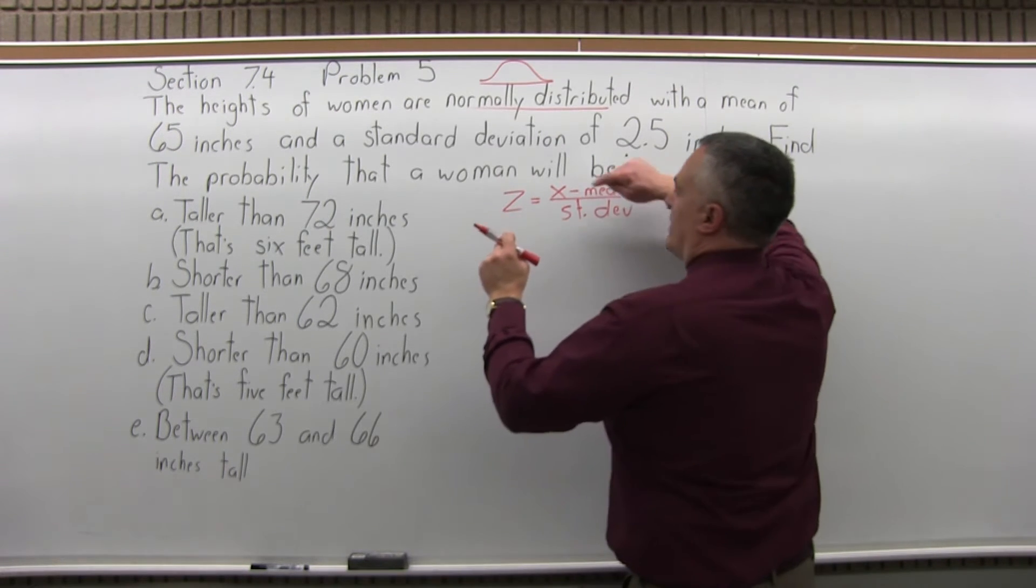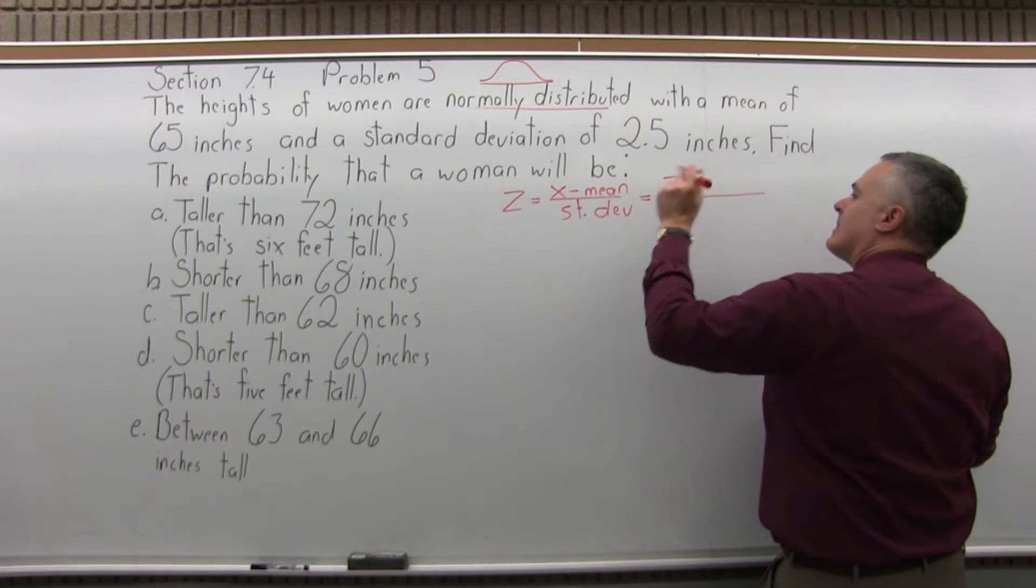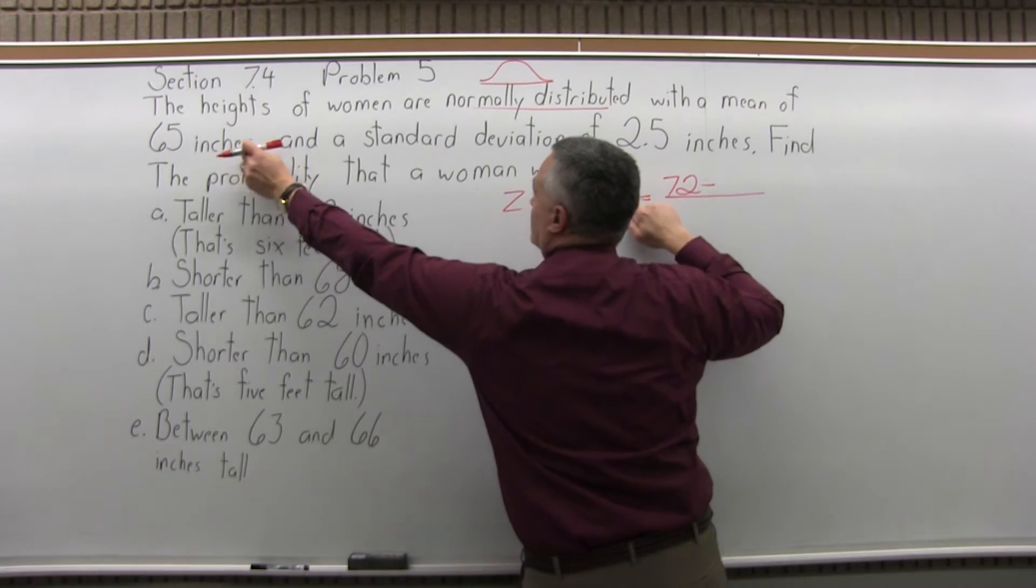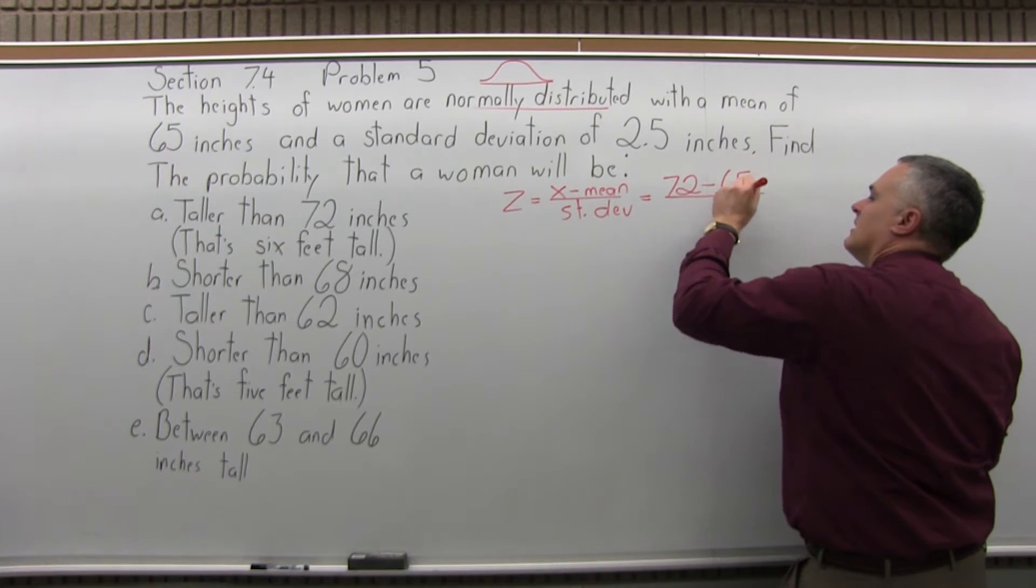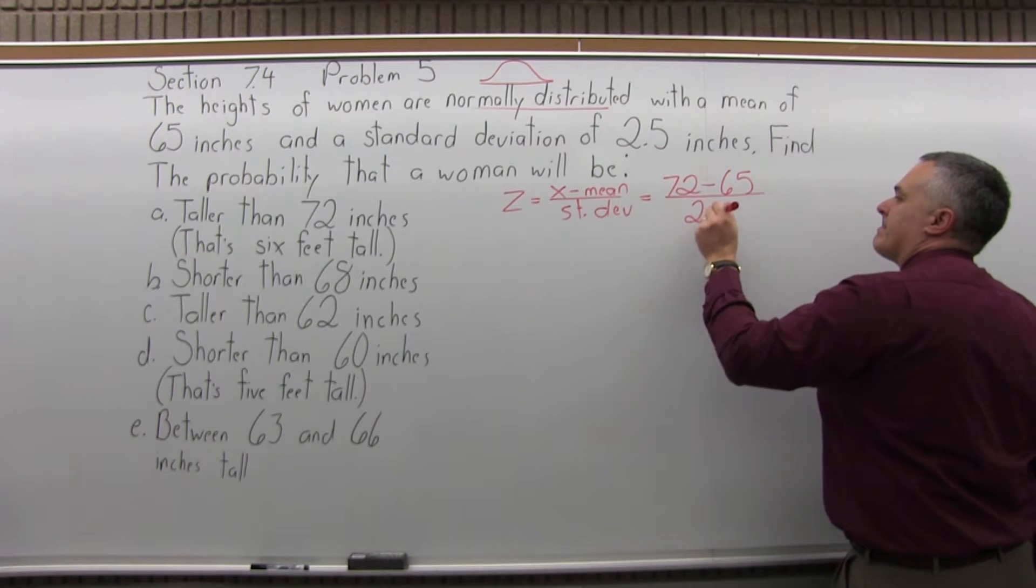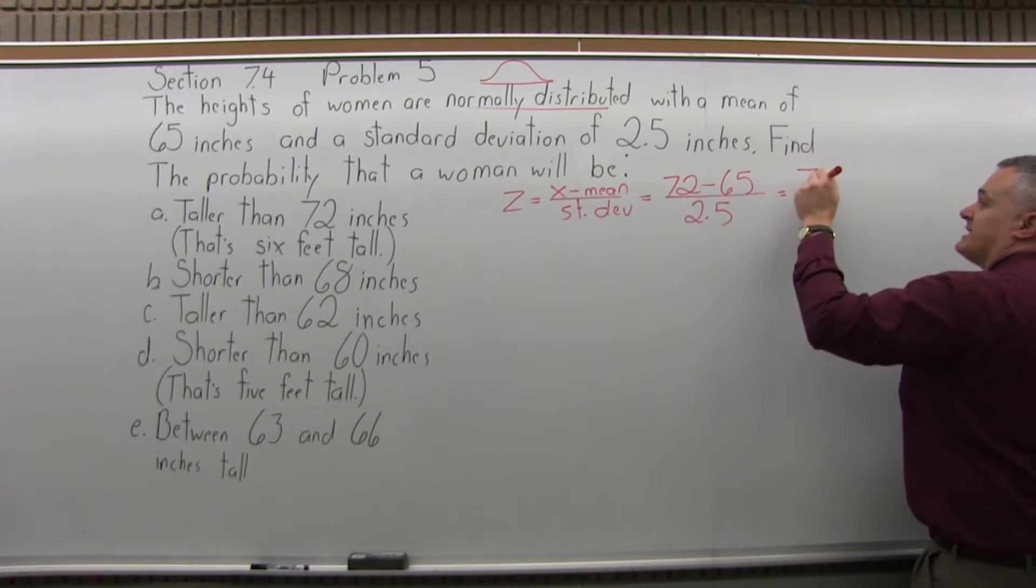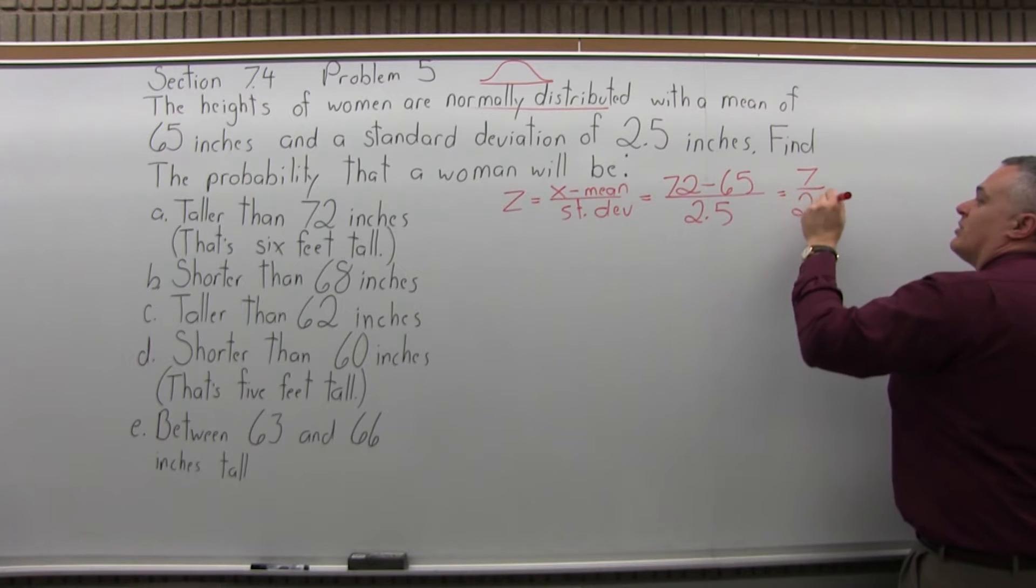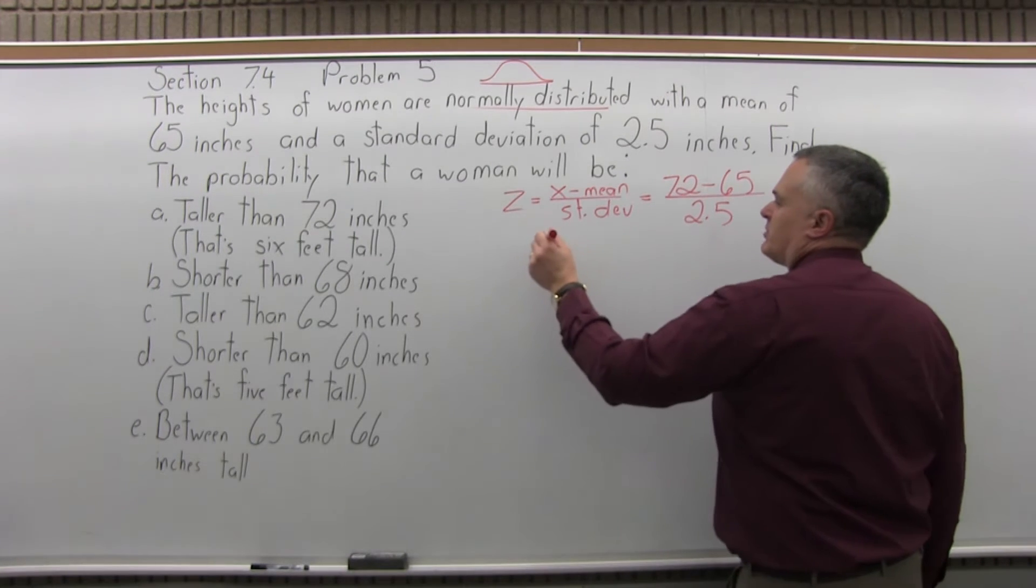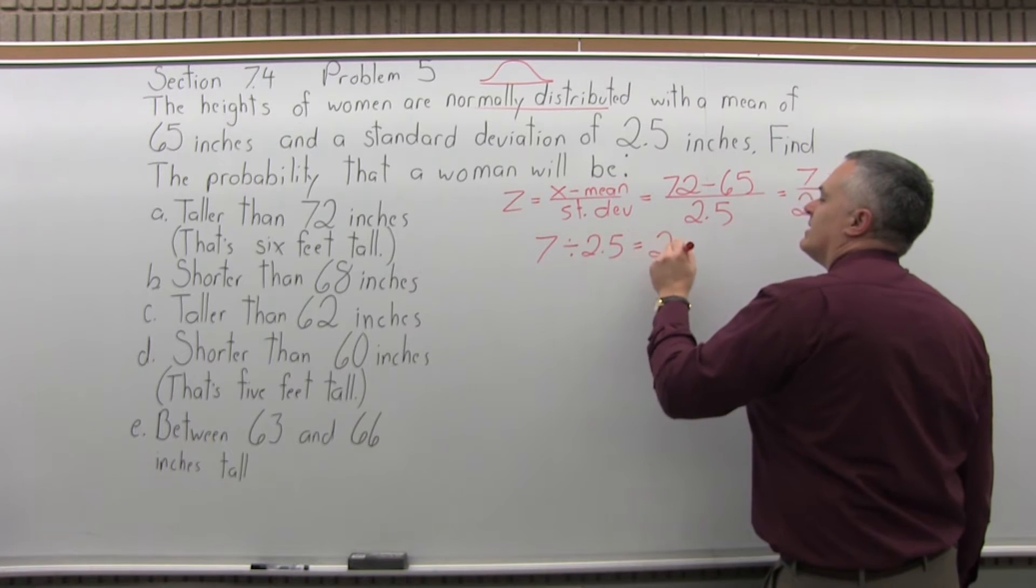So, the z-score formula is z equals x minus the mean divided by the standard deviation. And x is the number we want to find the z-score for, for this particular problem, 72. Then minus the mean or average value is given as 65 inches divided by the standard deviation, also given 2.5. So now in the numerator, 72 minus 65 is positive 7 and underneath 2.5. 7 divided by 2.5 equals 2.8.